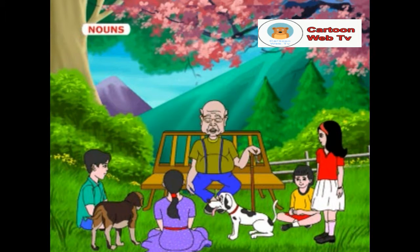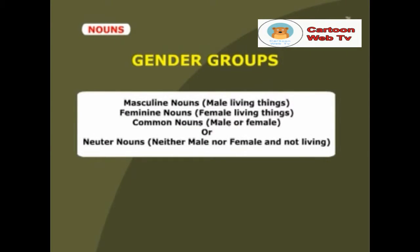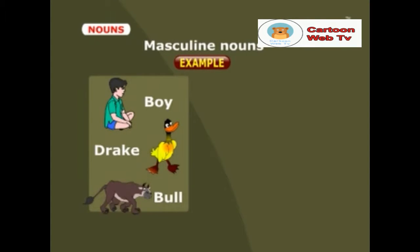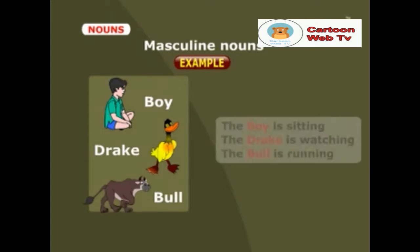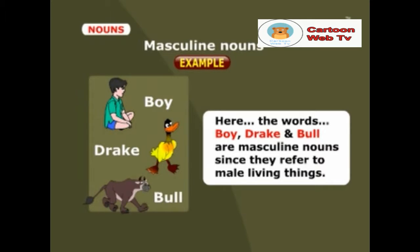Children, it is important to know that nouns belong to gender groups. They can either be masculine nouns (male living things), feminine nouns (female living things), common nouns (male or female), or neuter nouns (neither male nor female and not living). Here are some examples for masculine nouns: 'The boy is sitting. The drake is watching. And the bull is running.' Here the words boy, drake and bull are masculine nouns since they refer to male living things.